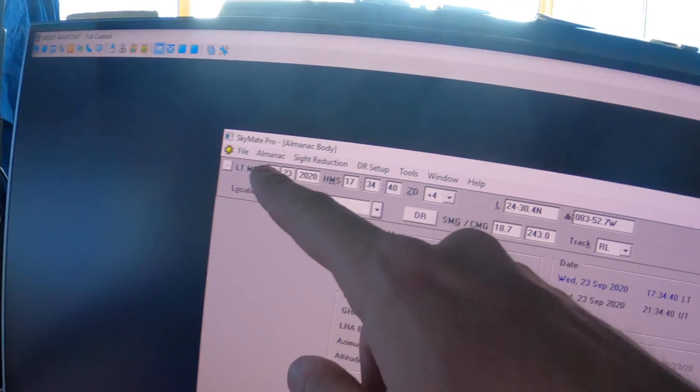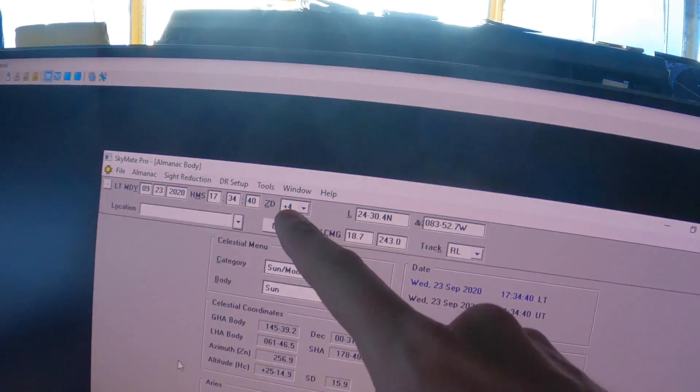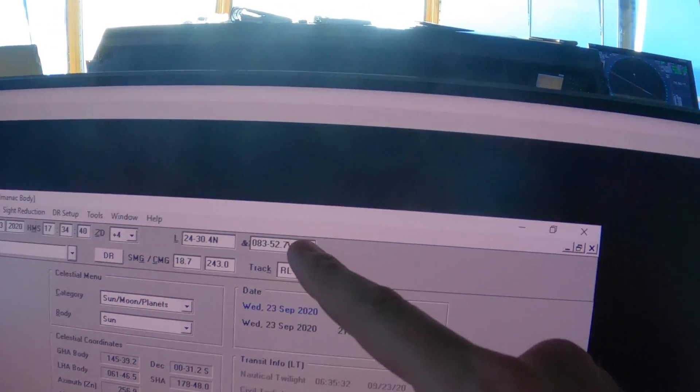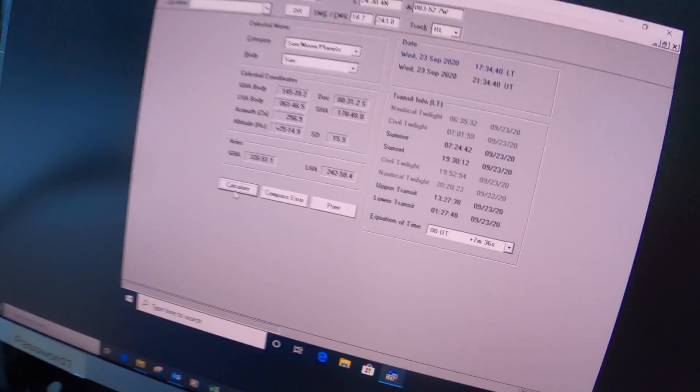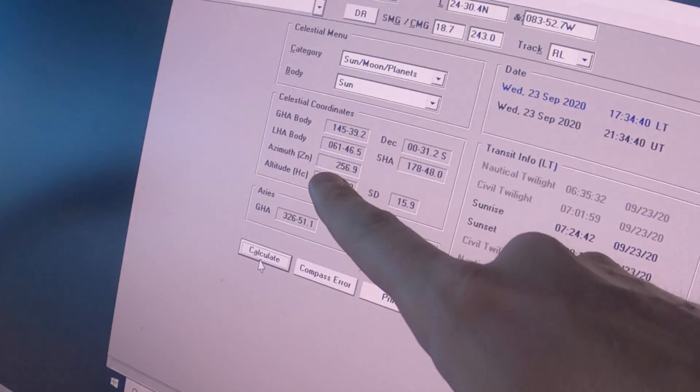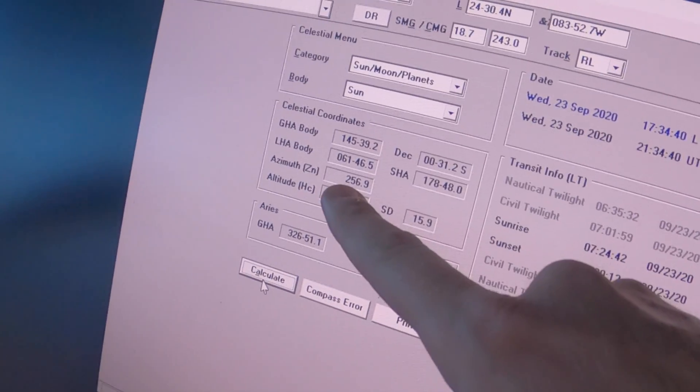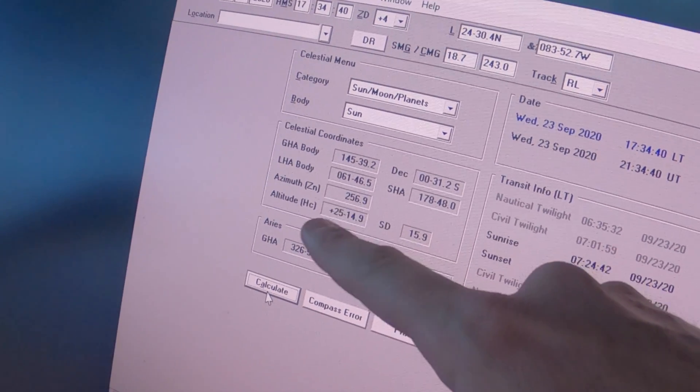So we already pre-populated the date, the time, the zone description, the latitude and longitude. And then we go down, if we hit calculate, it'll tell us that the actual true azimuth of the sun was 256.9 degrees.